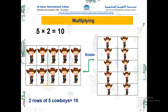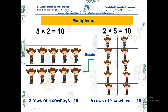Now let's swap the numbers and see. Here we have five rows of two cowboys. Still the total is ten — let's check, we need to count in twos five times: two, four, six, eight, ten. Super amazing! You see the total is the same — ten. So the multiplication sentence will be two times five equals ten. Amazing job, well done.